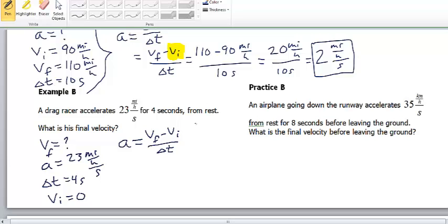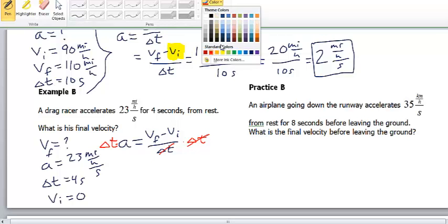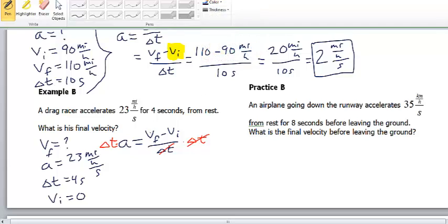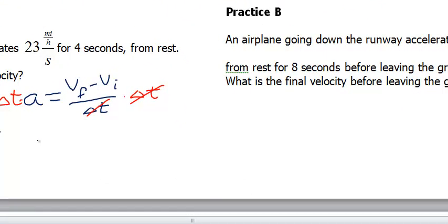We can multiply both sides by delta T. So, we'll multiply the right side by delta T and the left side by delta T. Now, our delta T's are going to go away on the right side. And, what we'll be left with is a different form of the equation where we have V final minus V initial equals acceleration times time interval.